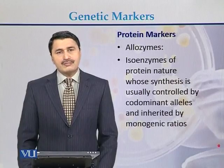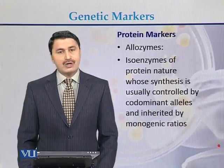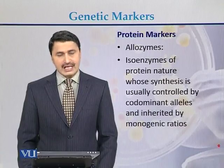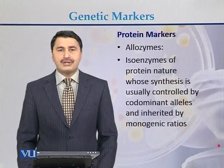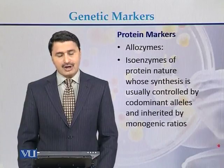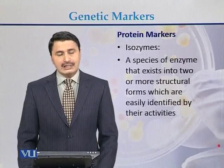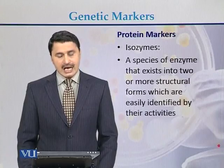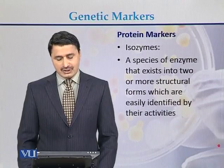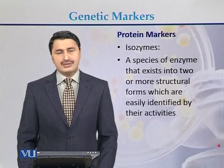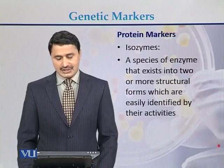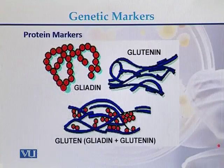What are the protein markers? Protein markers can be in different forms. They can be alloenzymes — isoenzymes of protein nature whose synthesis is usually controlled by codominant alleles. Other types of protein markers are isozymes. Isozymes are a species of enzyme that exists in two or more structural forms, which can be identified by their activities. Protein markers can also be in the form of glycine, glutinine, or gluten.